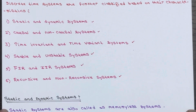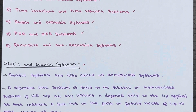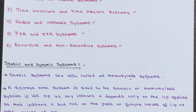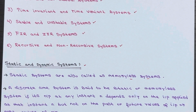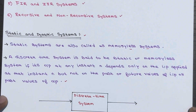Today we are going to deal with static and dynamic systems. Static systems, also known as memoryless systems, are our first topic of discussion. These systems are pretty straightforward. In a nutshell, a discrete time system is considered static if its output at any given moment only depends upon the input applied at that same moment. It does not care about what happened in the past or what might happen in the future — it's all about the here and now.